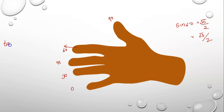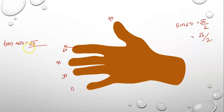This is tan. Tan 45 — using root n by n. Root 45: below is 1, 2 — root 2. Above is root 2.